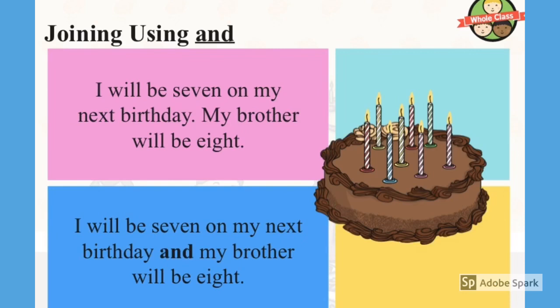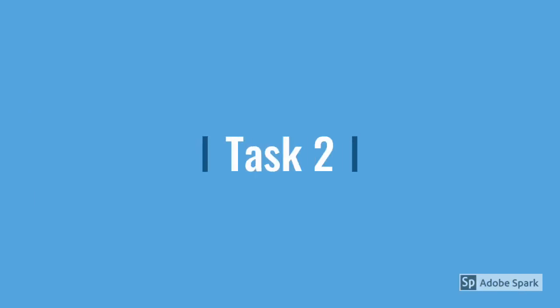I will be seven on my next birthday. My brother will be eight. We use 'and' to join those two sentences and it becomes: I will be seven on my next birthday and my brother will be eight. Task number two.